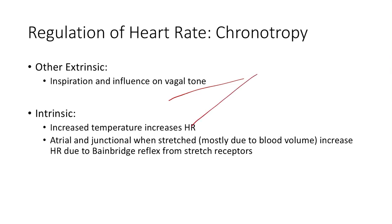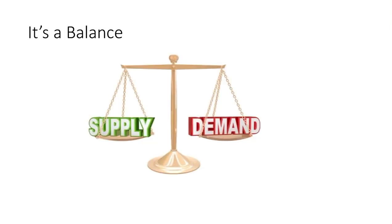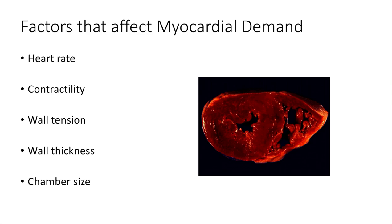Higher body temperature typically produces a higher heart rate. We also see increased heart rate with atrial stretch due to the Bainbridge reflex. Importantly, as heart rate increases it also increases demand on the heart.